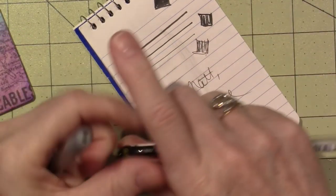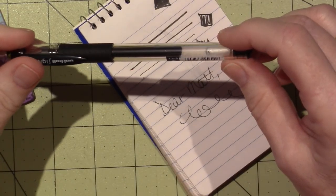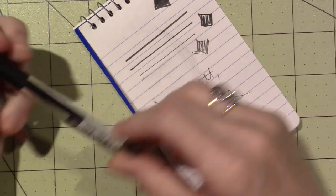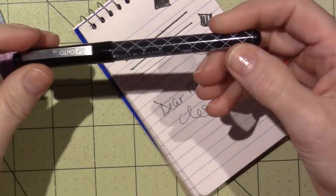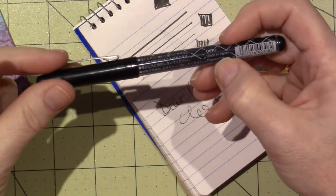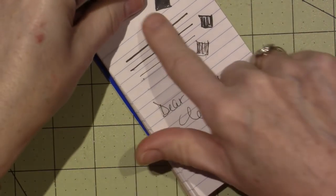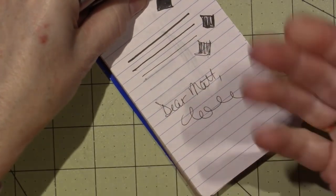This is waterproof, fade proof. I thought it said fade proof on here. The Posca ball, let's see if that says anything. This is pigment ink, and it says water and fade proof. So let me just, yeah, nothing smudging.